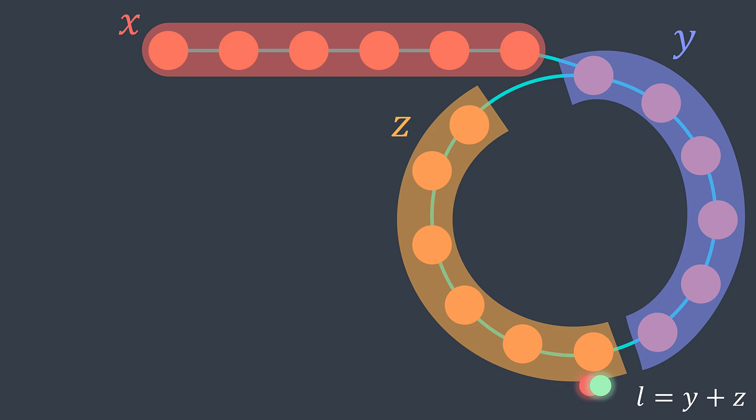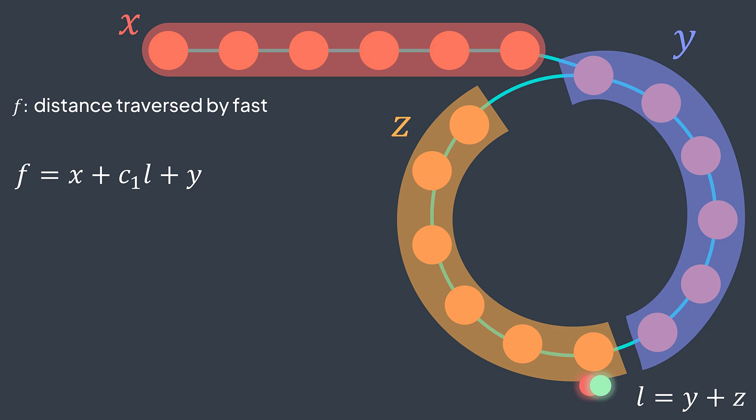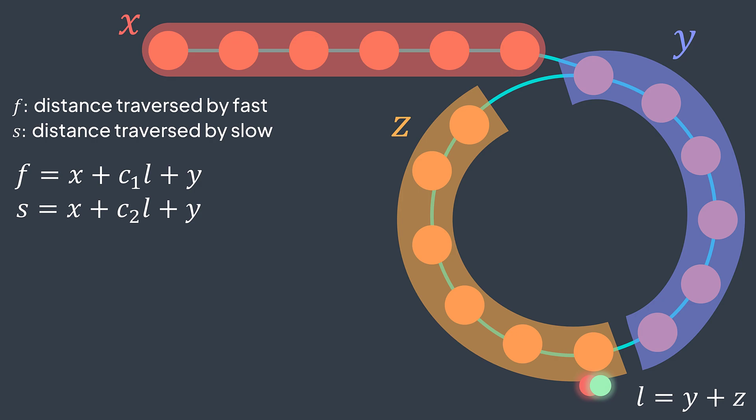Now let's analyze the distance traversed by the slow and fast pointers before they meet. Fast traverses the part before the cycle x, then traverses the cycle c1 times (where l is the cycle length), then traverses y. So the distance traversed by fast is: f = x + c1·l + y. For slow, it also traverses x, then loops c2 times (c2 can differ from c1), then traverses y. So the distance traversed by slow is: s = x + c2·l + y.